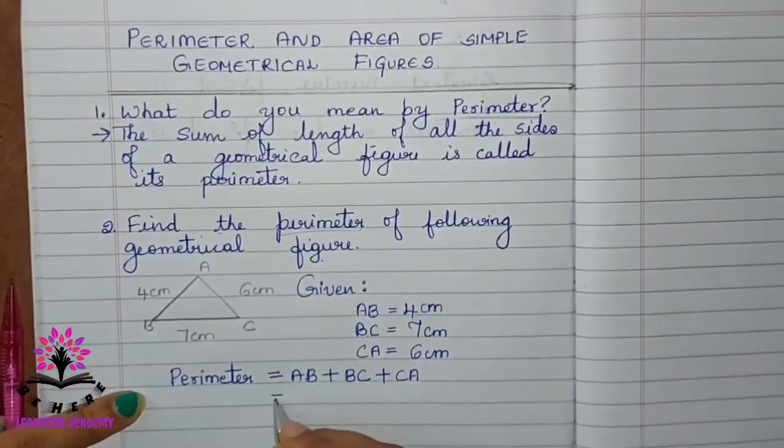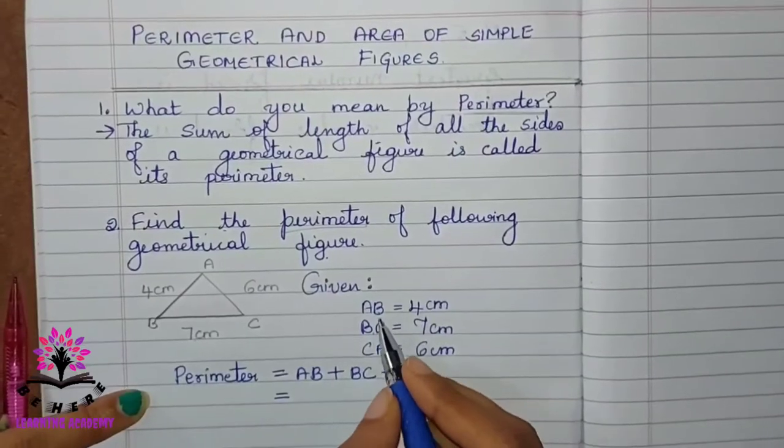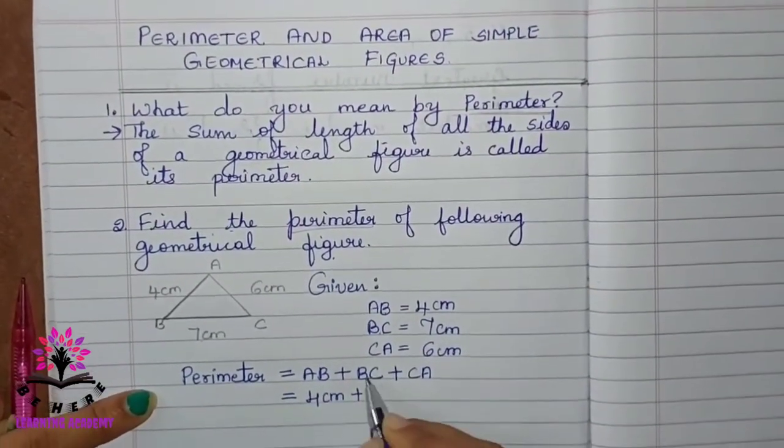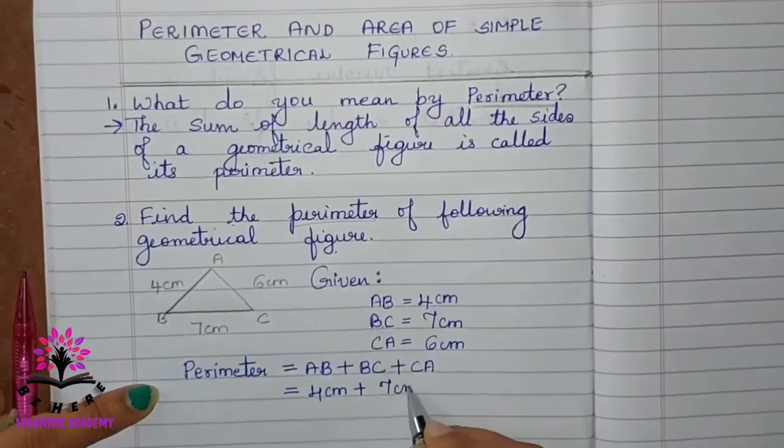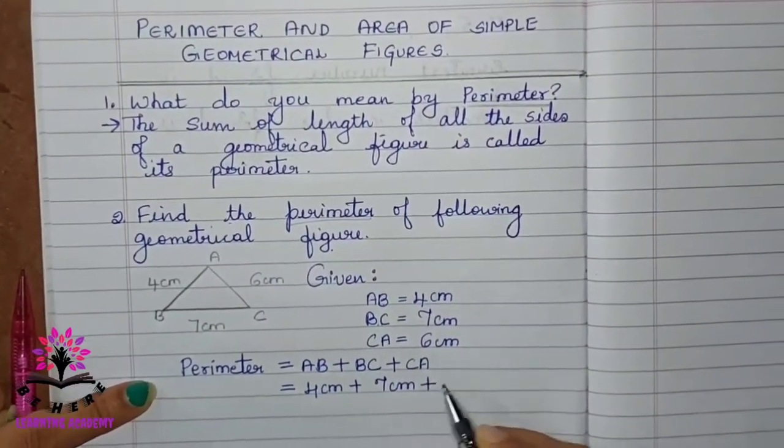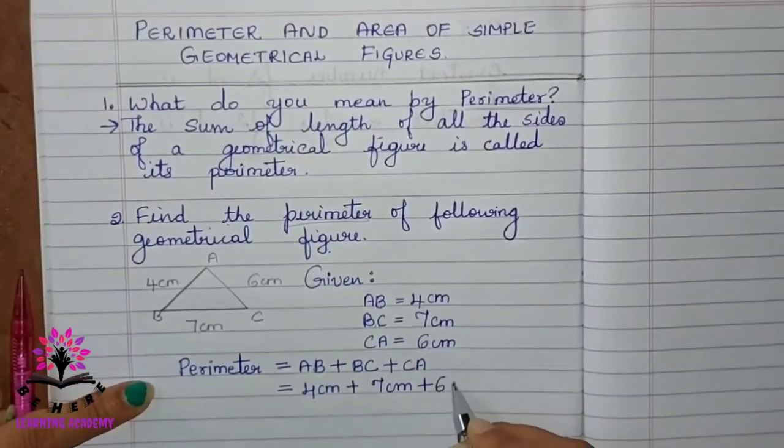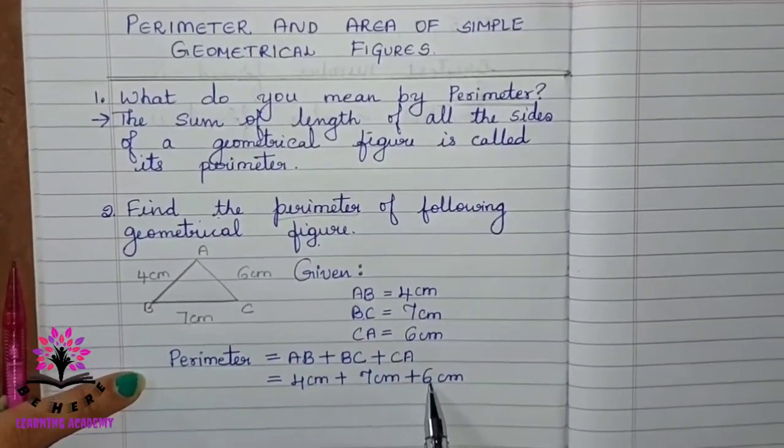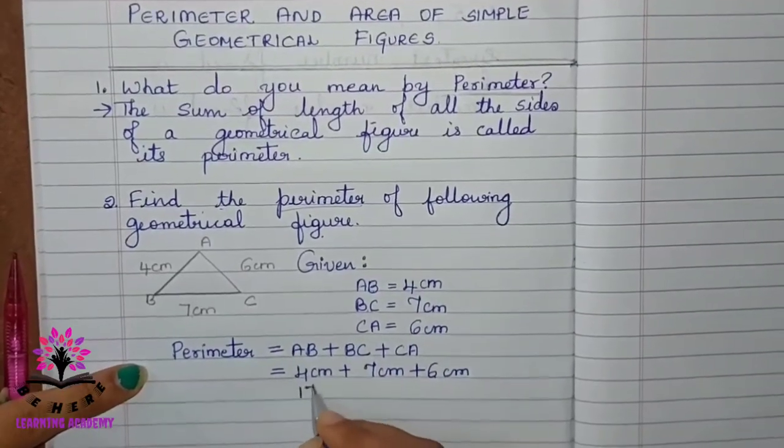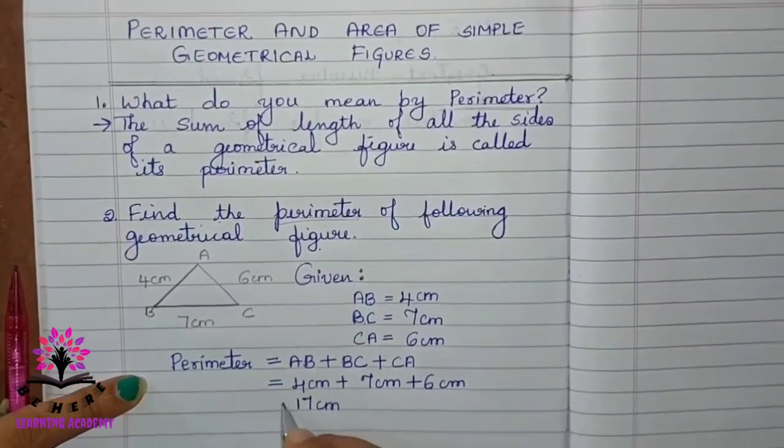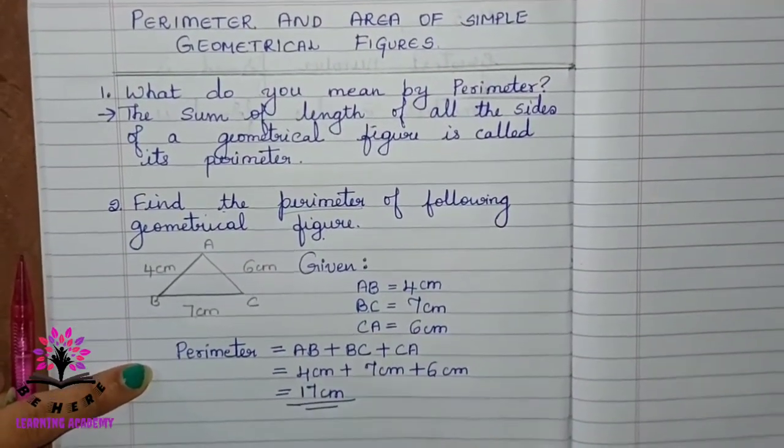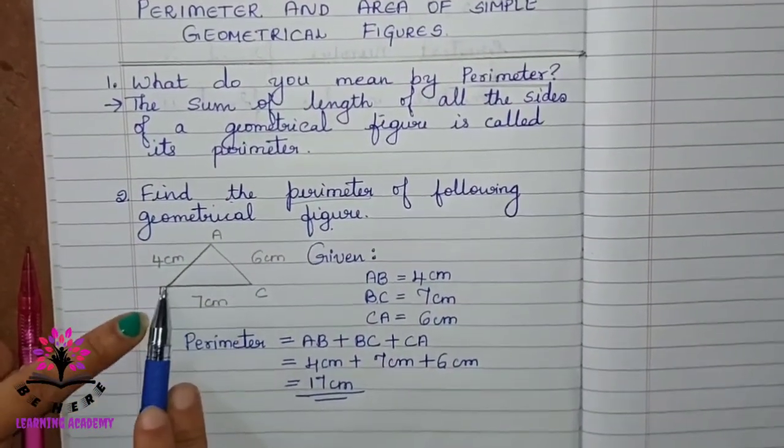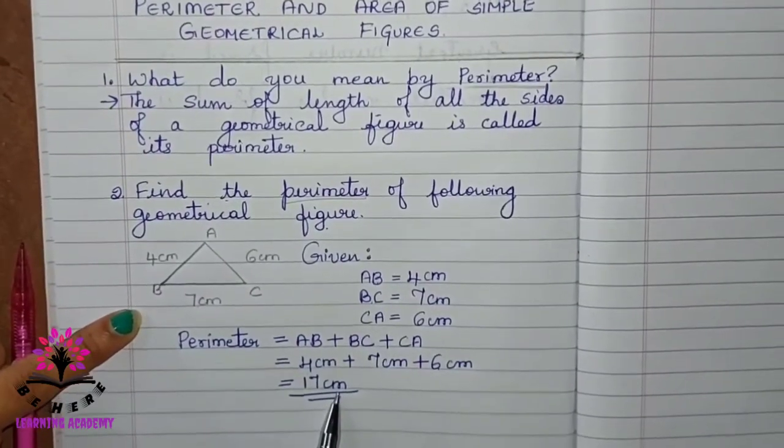Then, you write is equal to AB is 4 cm plus BC is 7 cm plus CA is 6 cm. 4 plus 7 plus 6, you will get the answer 17 cm. Underline the answer. So, the perimeter of this triangle is 17 cm.